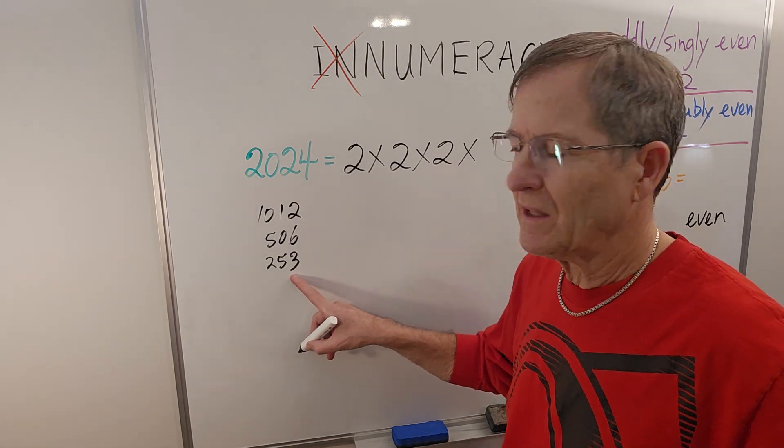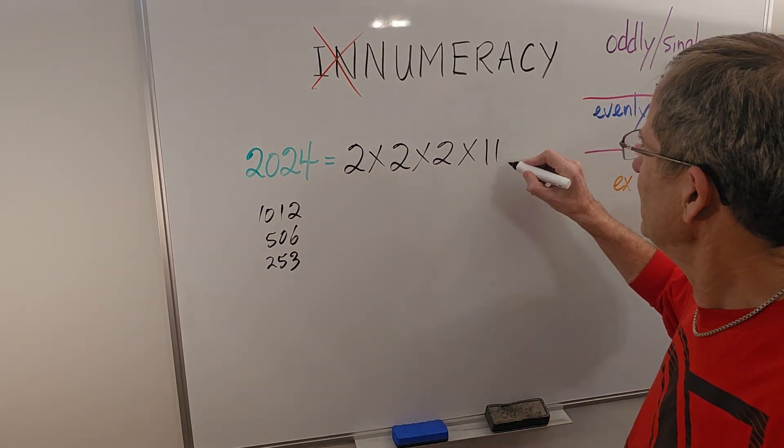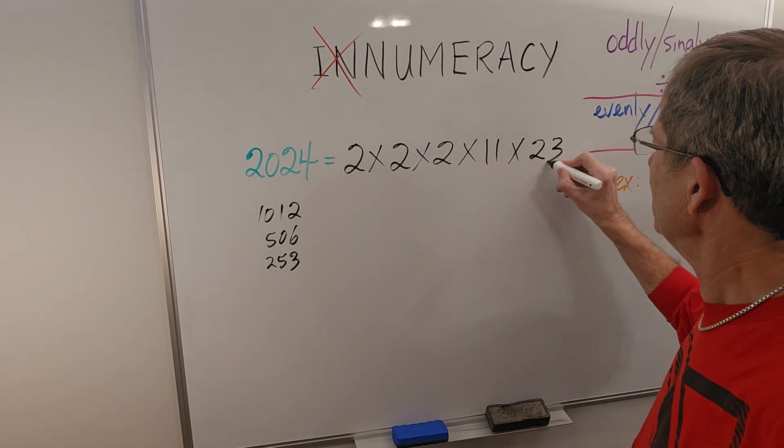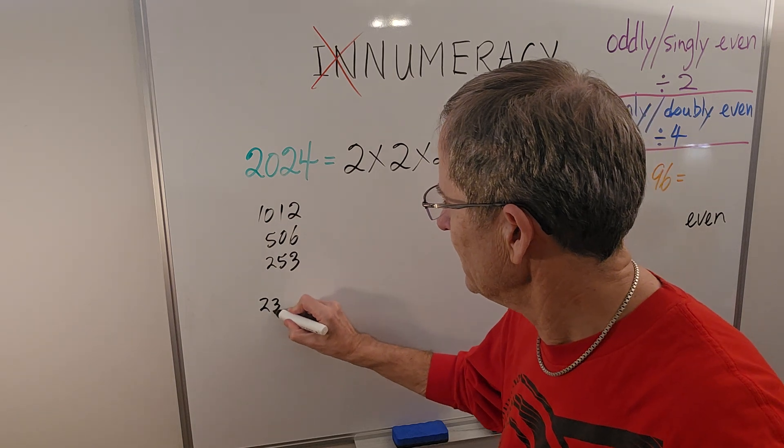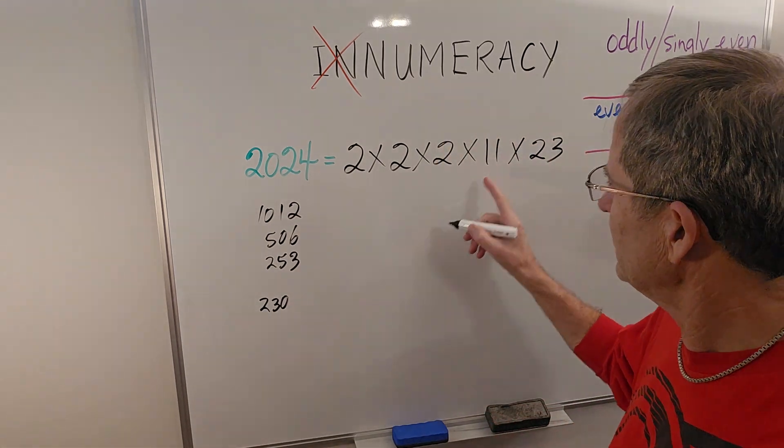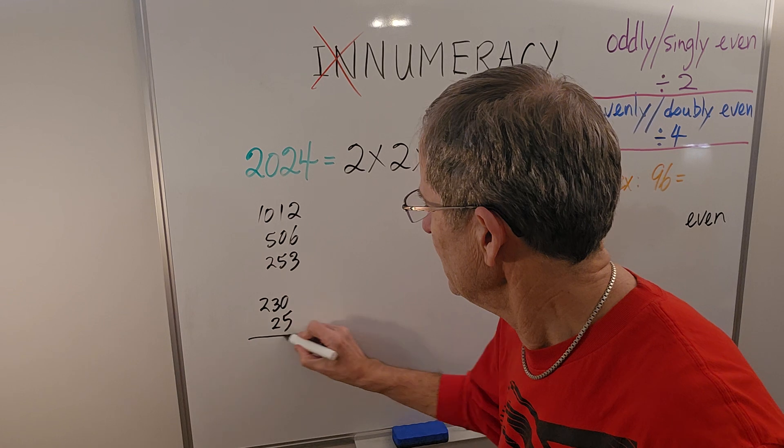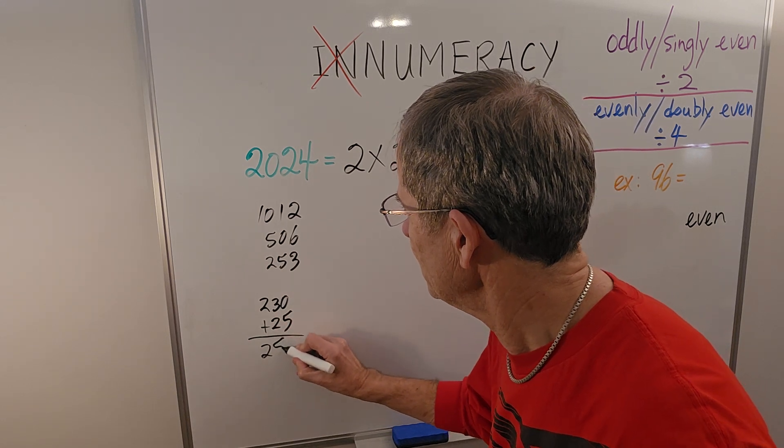You can, of course, use a calculator, and it turns out it is 11 times 23. You can quickly check that, because ten elevenths would be 230, and one more 11 would be 23. Add them up. Sure enough, 253.